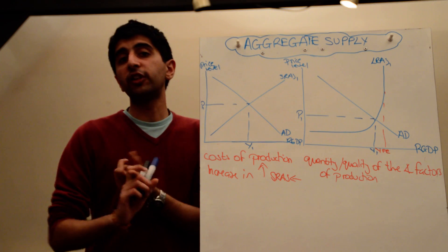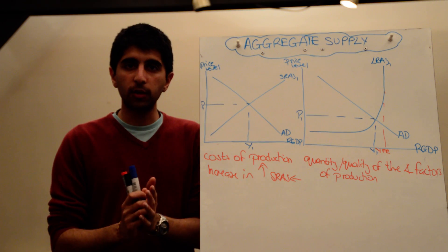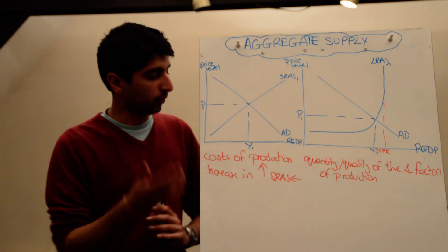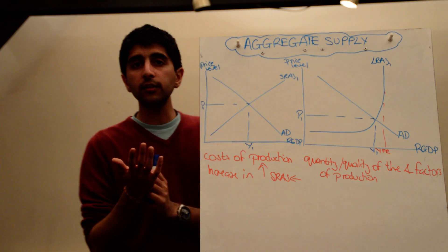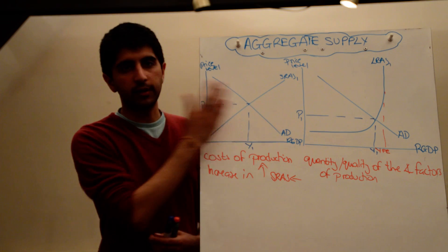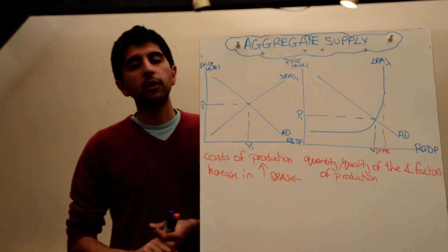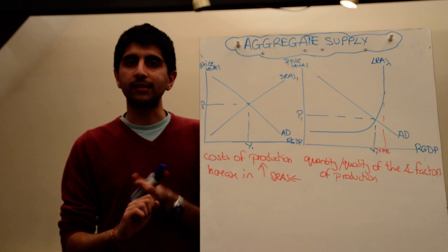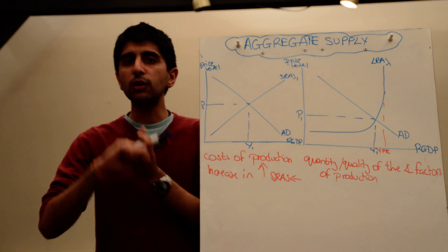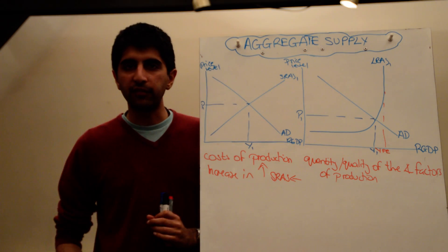Second, an increase or change in wages. If there is a change in wages in the economy, that's going to affect cost of production. So an increase in wages will increase the cost of production and shift SRAS to the left. The third factor could be an increase in business taxes, like VAT. An increase in VAT will increase the cost of production and shift SRAS to the left.